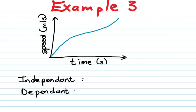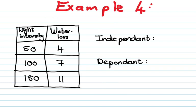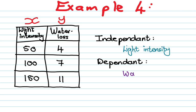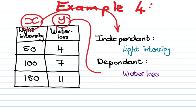In example number three, we are given a graph — and graphs are only tricky the first time. Here we just look at what is on the x-axis and what is on the y-axis. The independent variable goes on the x-axis, so time is the independent variable and speed is the dependent variable. For tables, remember your ABCs: x comes before y in the alphabet, so x is always first. That means the independent variable is on the left-hand side — in this case light intensity — and the dependent variable is on the right-hand side, which is water loss.